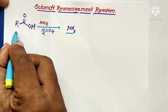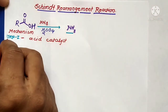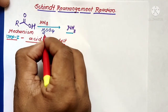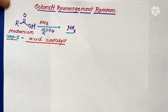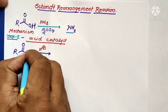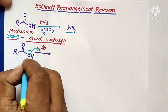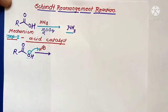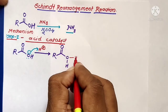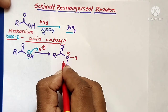In Step 1 of this reaction, the carboxylic acid is catalyzed by sulfuric acid — that is, an acid-catalyzed reaction. The oxygen's lone pair of electrons donates toward the proton to form a new bond between H⁺ and the oxygen atom, forming R-C(=O)-OH₂⁺, where the oxygen now carries a positive charge and is electron-deficient.